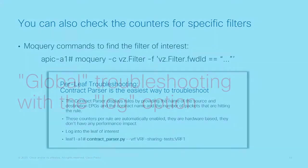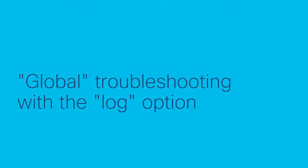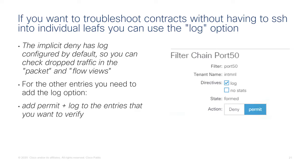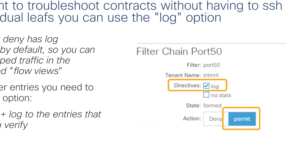If you want a more practical way to look at the problem — imagine you have many leaves and don't want to figure out which leaf to look at — the log option can help. ACI has contract logging capability, just like ACLs. The implicit deny has the log option on by default, so dropped packets are logged automatically. But if you want to troubleshoot a contract configuration and see if traffic is hitting the permit rules you've entered, you need to add the log option to the permit configuration.